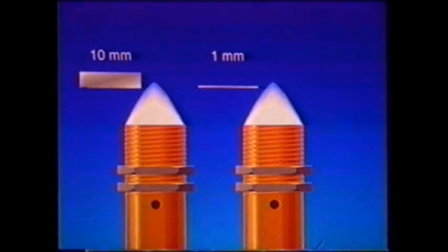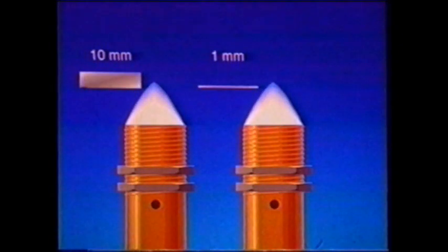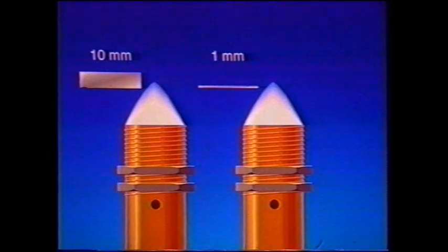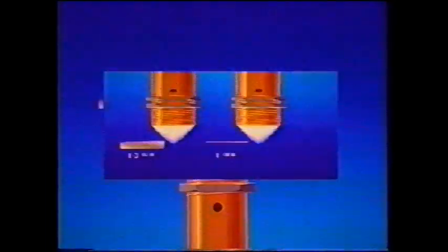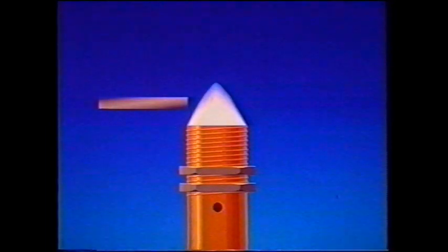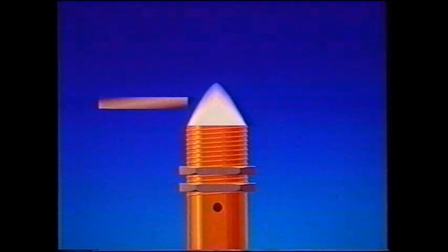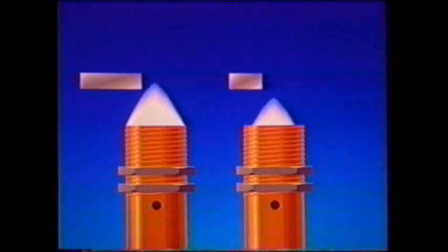Target thickness normally doesn't affect sensing range. For very thin targets, such as metal foil, the actual sensing range may be longer than the nominal range. The size of the target does affect the actual sensing range. The specified range is based on a target that is large enough to cover the entire active face of the switch. If the target is smaller, the turn-on, turn-off graph will be different and the actual range will be shorter.